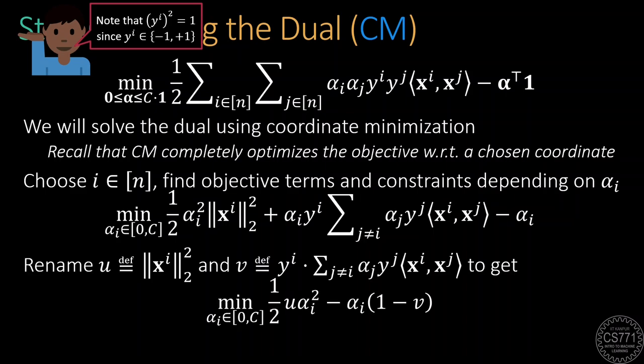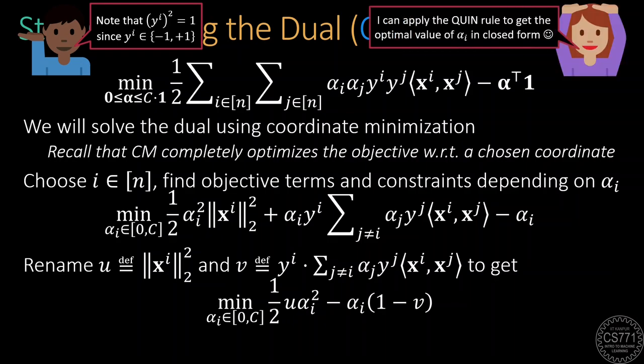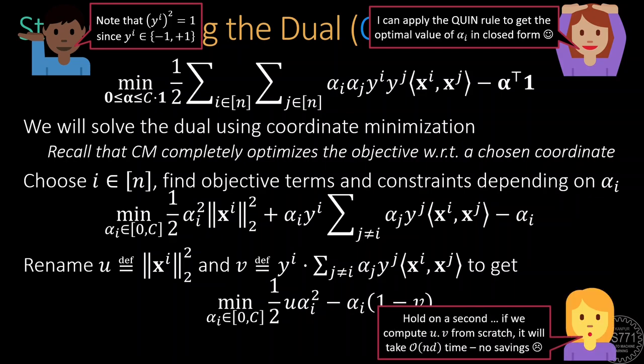Recall that in this technique, we choose one coordinate in every iteration and minimize the objective completely with respect to that coordinate, keeping all other coordinates fixed. We will need to be more careful while applying coordinate minimization here since we have constraints as well. Let us fix some coordinate i of the alpha vector on which we wish to minimize. Take some time to do the calculations yourself to find out all the terms in the objective that depend on alpha i. Also find out all the constraints that depend on alpha i. A little bit of cleanup and defining two new real variables u and v to simplify the notation, tells us that the minimization problem with respect to alpha i is extremely simple. It is just a one-dimensional quadratic minimization problem with an interval constraint, which can be solved very easily using Melbow's favorite coordinate Quinn trick that we saw in the previous discussion.